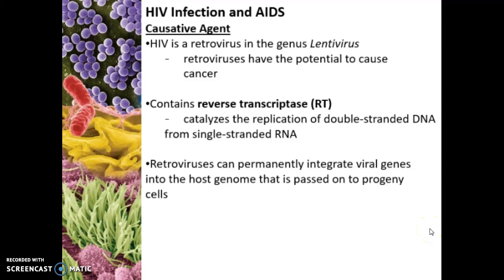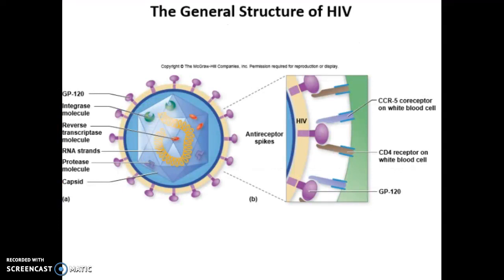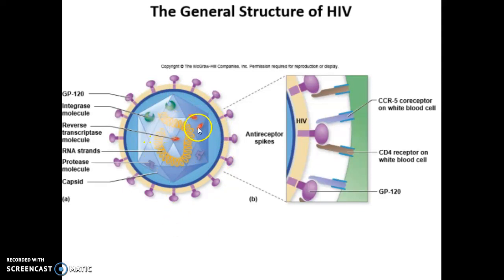The viral genome is incorporated or integrated into the host DNA, and then it is carried with those cells as they reproduce. With the structure of HIV, you have the virion, and it is a complex virus. Here is the capsid with that nice icosahedral shape. You have the RNA strand on the interior, and then you have the different proteins — here is the integrase.